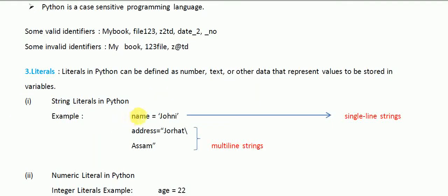What is a string literal? Here, for example, 'name = "Johnny"'. This is a single-line string. The value 'Johnny' is stored in the variable called 'name'.